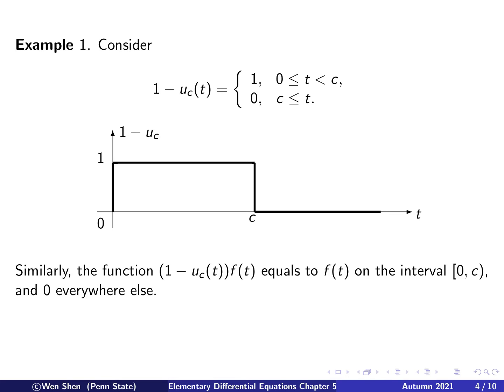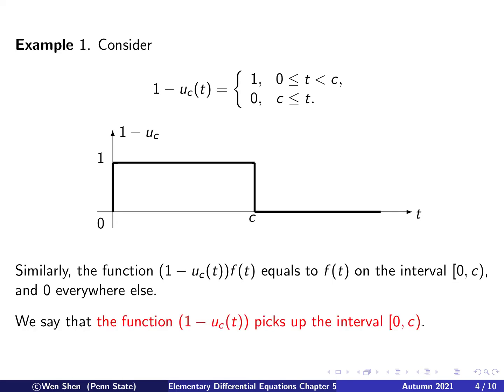We can multiply the function 1 minus u_c by some other given function. This product will equal f of t on the interval from zero to c, because it's one there, and zero everywhere else. So we say that 1 minus u_c(t) picks up the interval from zero to c.